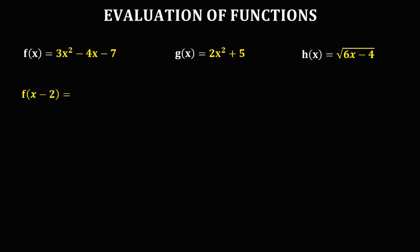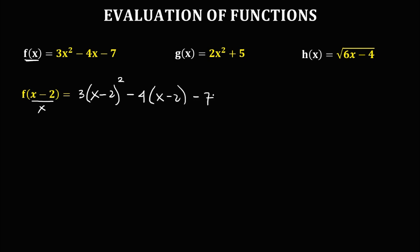For f of x minus 2: from f of x, but x is equal to x minus 2. We substitute x minus 2 for x in the equation of f of x, giving us 3 times (x minus 2) squared, then minus 4 times (x minus 2), then minus 7.